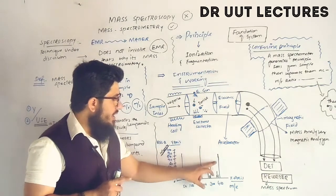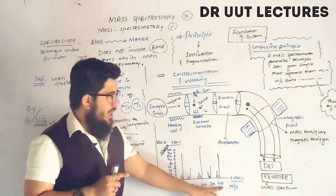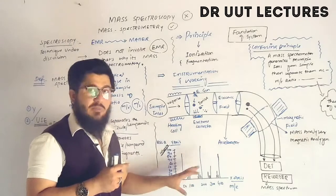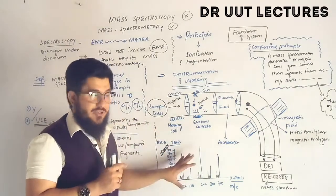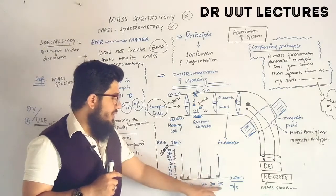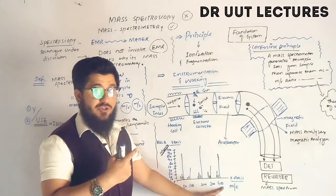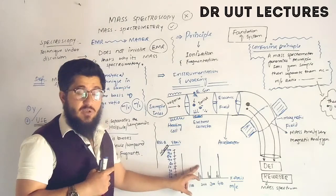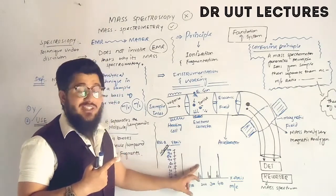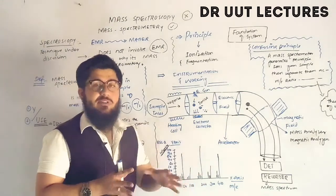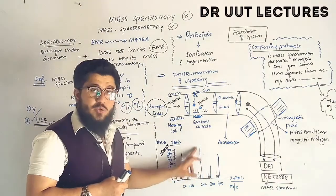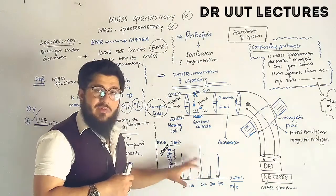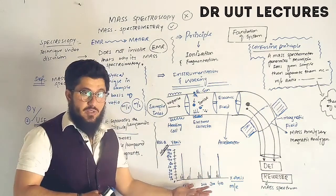The first peak with the highest mass-to-charge ratio — for example at 400 — represents the intact molecule and is called the molecular peak. The peak showing the maximum intensity is called the base peak. The remaining peaks show the other fragments and their relative abundances within the molecule.